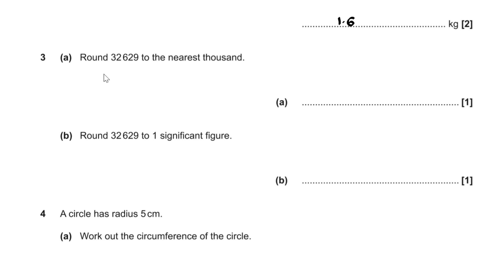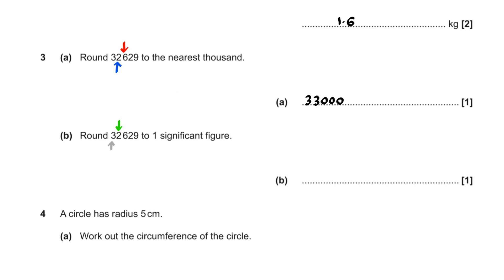Question 3. To round 32,629 to the nearest 1,000, we look at the digit after the thousands column, which is 6 — greater than 5, so we round up to 33,000. Rounding 32,629 to 1 significant figure, we look at the 2, which is less than 5, so we don't round the 3 up, giving 30,000.